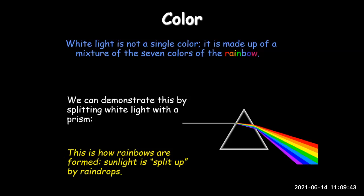This is how rainbows are formed. Sunlight is split up by raindrops. When it rains and the sun is shining, the raindrops split the sunlight and we are able to see the rainbow. So white light consists of seven colors.